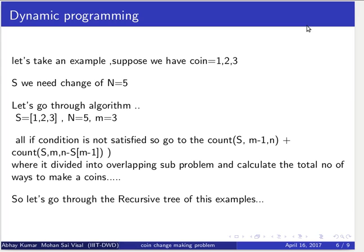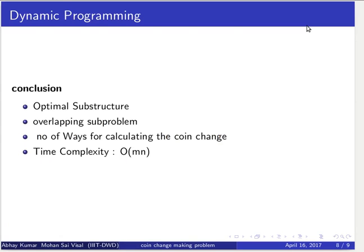We can conclude that for coins {1, 2, 3} and n equals 5, the possible ways include: five 1-rupee coins, 2 plus 3, 2 plus 2 plus 1, and others. This demonstrates optimal substructure and overlapping sub-problems, which are key properties of Dynamic Programming. The number of ways for calculating coin changes has a time complexity of O(m*n).